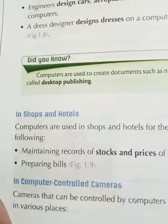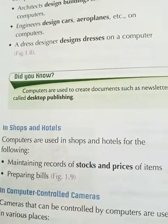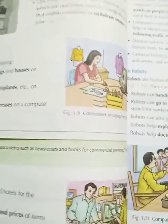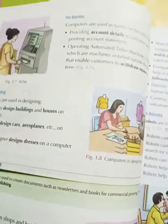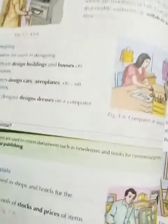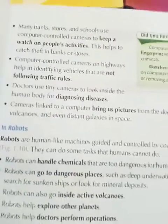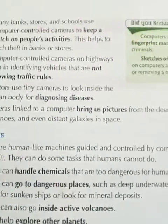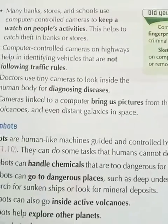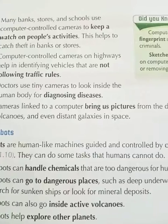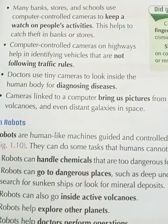The next heading is: computer control cameras. The cameras that are installed — CCTV cameras — like those in your school — they are operated by computer. Besides these, there are cameras in banks and in stores. You have seen them in various places so that people's activities can be monitored and places can be kept safe from thieves.